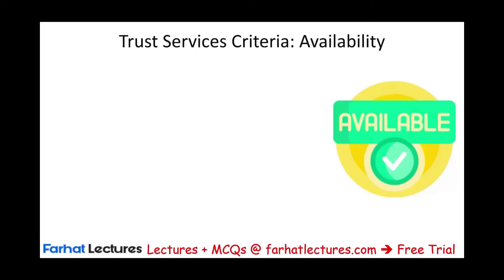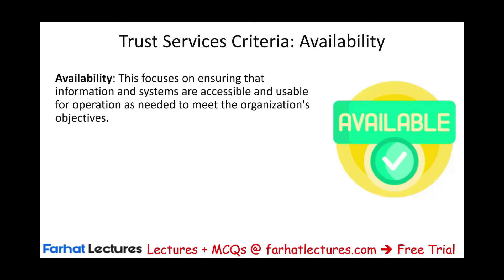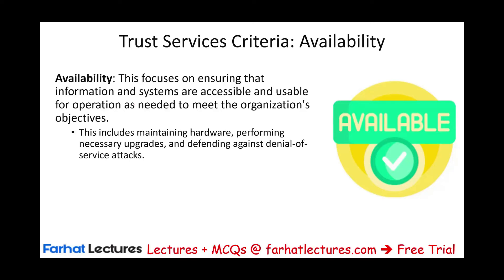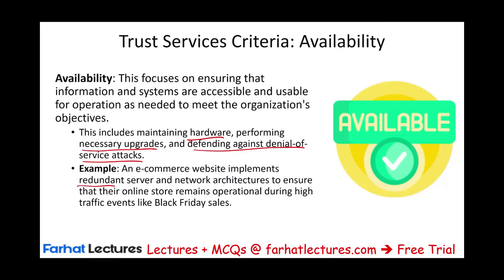Availability: this criterion focuses on ensuring that information and systems are accessible and usable for operation as needed to meet the organization's objective. This includes maintaining hardware, performing necessary upgrades, and defending against denial-of-service attacks — making sure your system is available. For example, an e-commerce company implements redundant server and network architecture to ensure their online store remains operational during high-traffic events like Black Friday sales. A company could engage an auditor to issue a SOC 2 or SOC 3 report — either Type 1 or Type 2 — about the availability of their system.